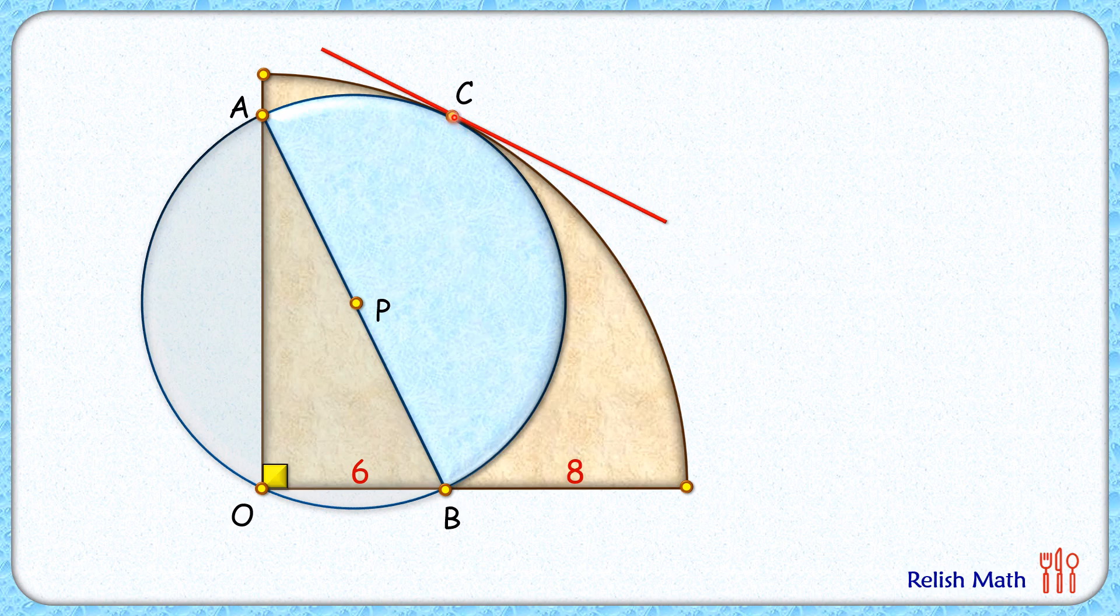And we know that a perpendicular drawn at the point of tangent C passes through the center of the circle. So it will pass through the center of the blue circle and also through the center of the brown circle. Here OC is the radius of your brown quadrant.